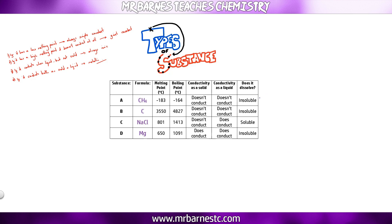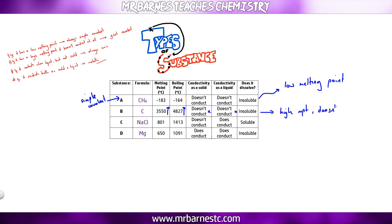Looking at an example table: Substance A has a low melting point and low boiling point — straight away it's simple covalent, no need to check other properties. Substance B has a high melting point and doesn't conduct as a solid or liquid, so it's giant covalent. Substance C has a high melting point, doesn't conduct as a solid, which rules out metallic, but does conduct when liquid — therefore it must be ionic. Substance D has a high melting point and conducts both as a solid and as a liquid, so it's metallic.